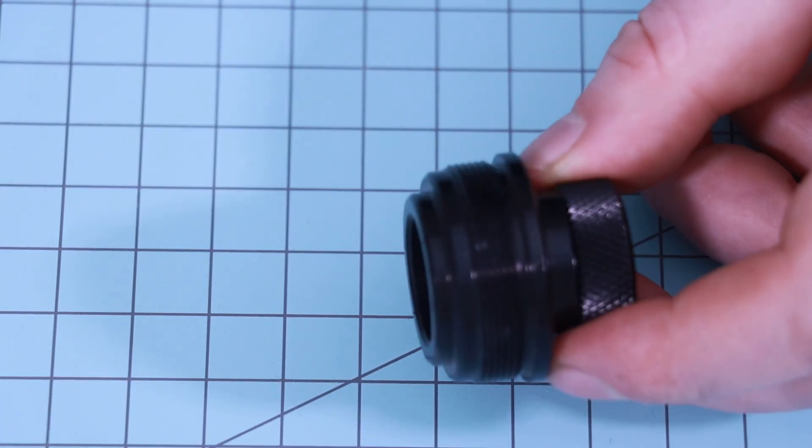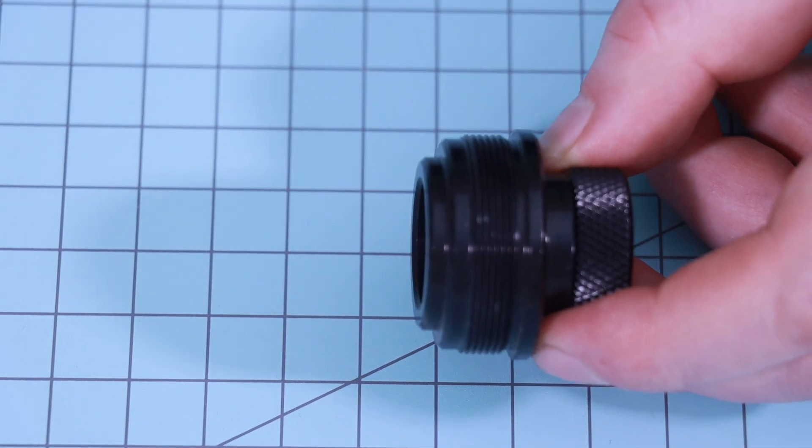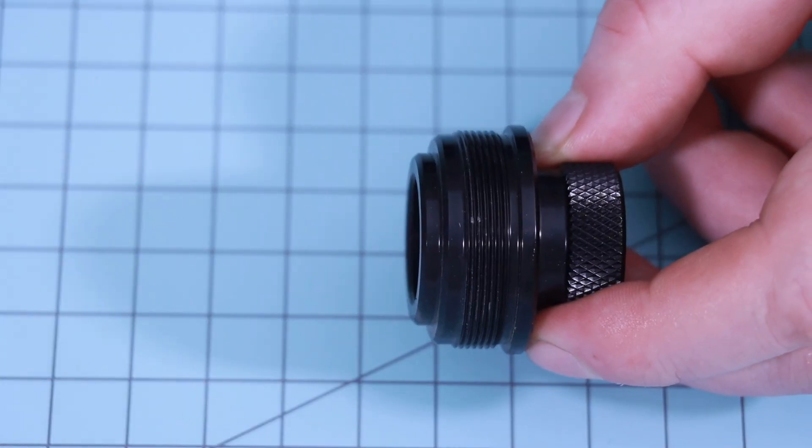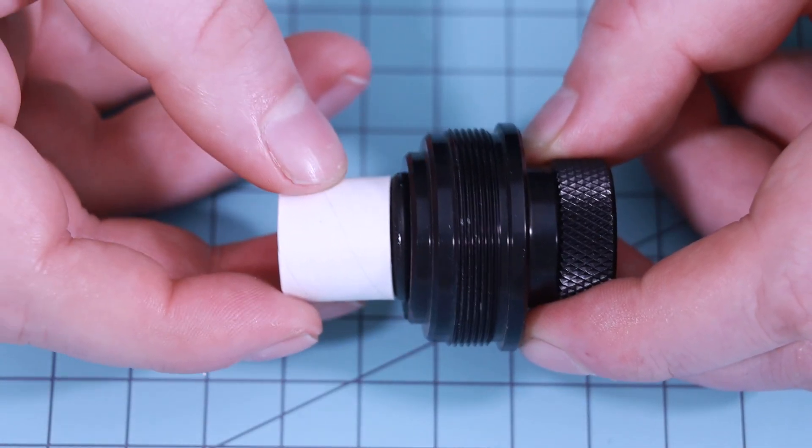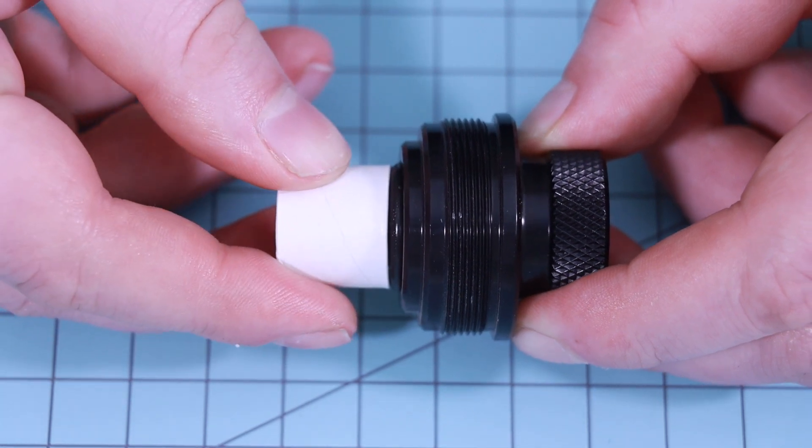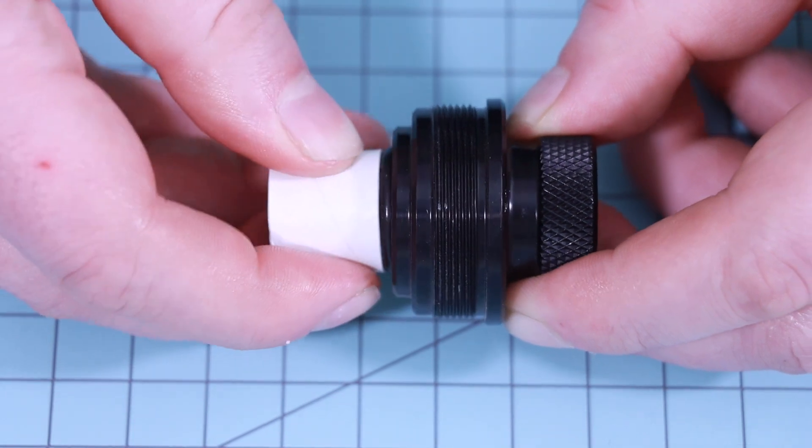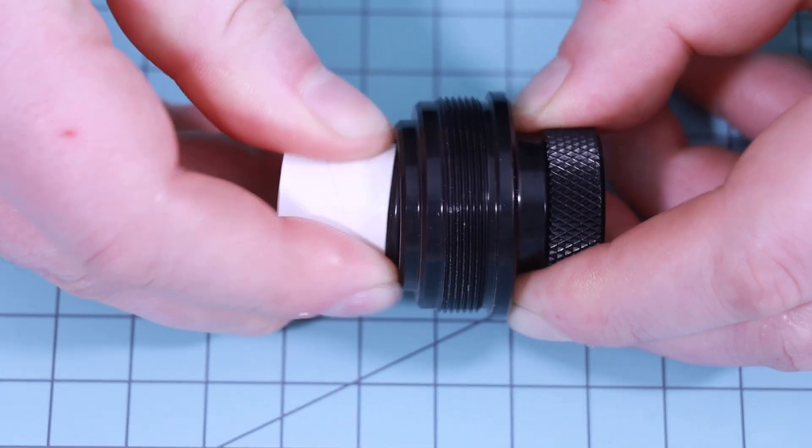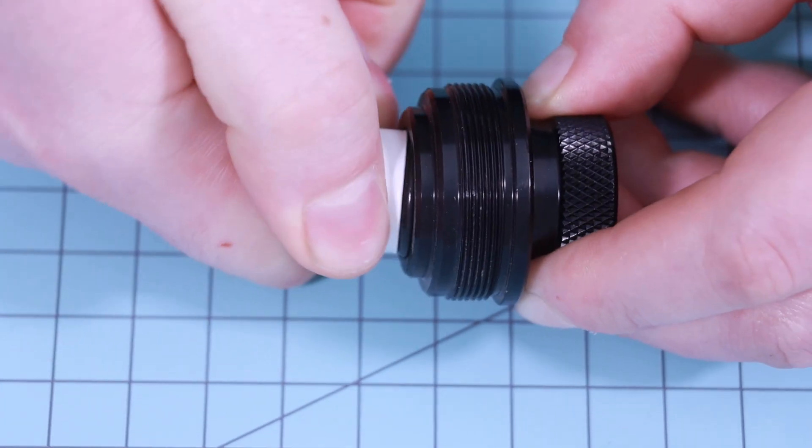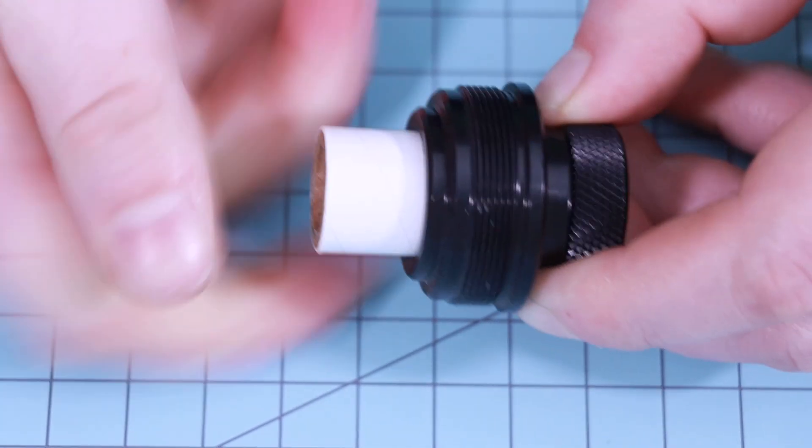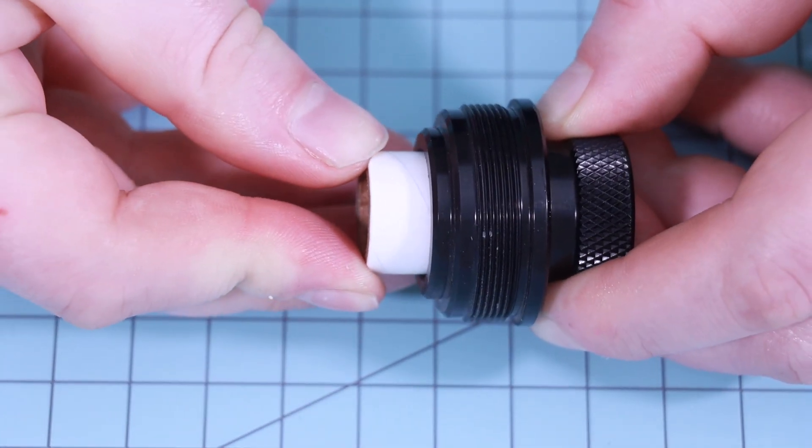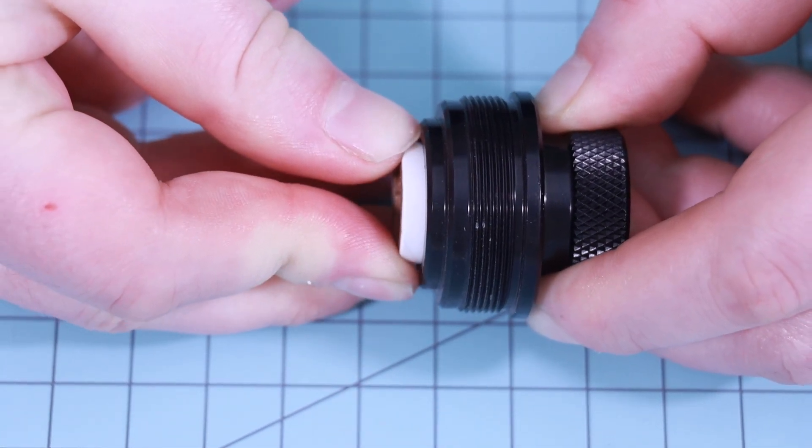Now we take the forward closure and our delay assembly, and we insert it into the forward closure o-ring side first and make sure it is fully seated into the forward closure up against the forward delay spacer. It takes a lot of force so be as careful as you can.